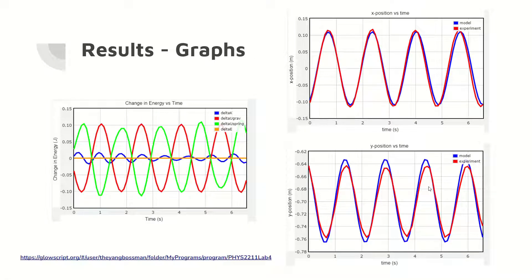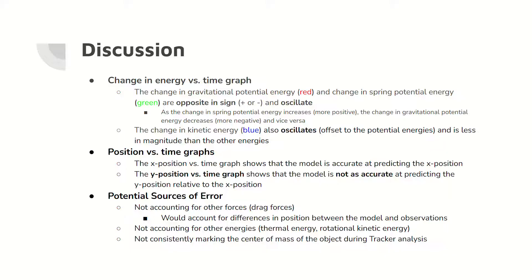Here are the graphical results for the computational model. The graph on the left is the change in energies over time. The two graphs on the right are the position versus time graphs for the model and for the observed tracker data for x position and y position. In the change in energy graph, the potential energies oscillate and are opposite in sign to each other. The kinetic energy also oscillates. In the position graphs, the y positions between the observed data and model differ more than the x positions between the two data, though both show some differences between the observed data and predicted data.